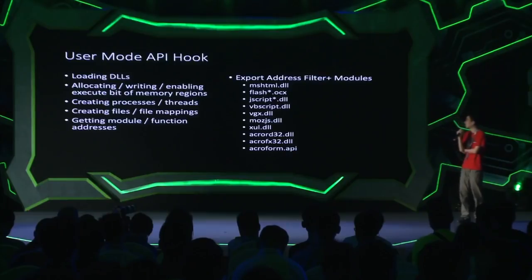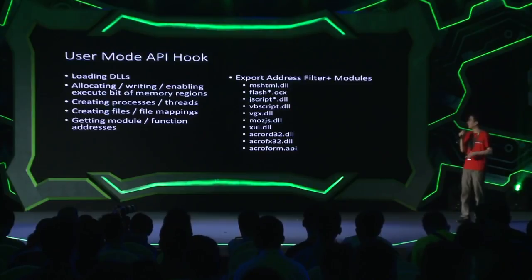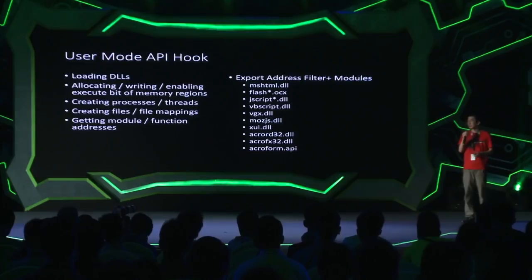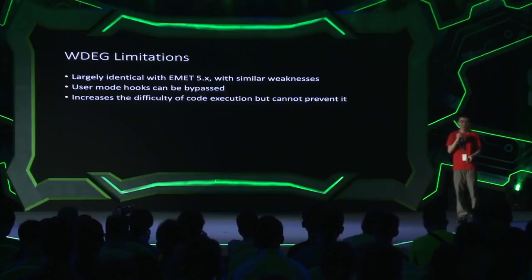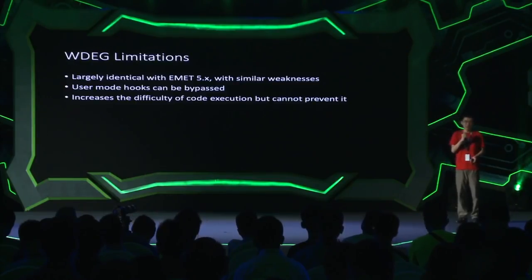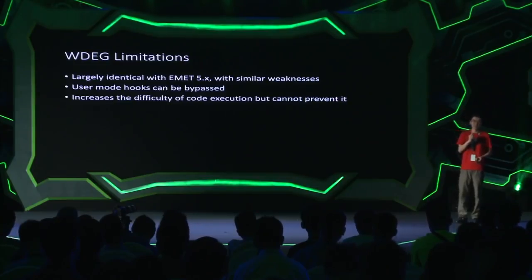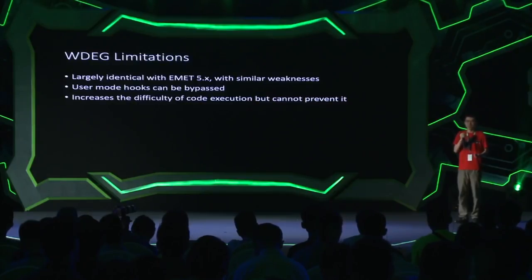Exploit Guard, like EMET, also uses user mode hooks to implement its features. In all these hooks it checks for potentially illegal operations. But Exploit Guard also comes with its own limitations, just like EMET. Its user mode hooks can be bypassed, and while it definitely increases the difficulty of code execution, it's really not preventing it because the attacker already has control over the execution flow.